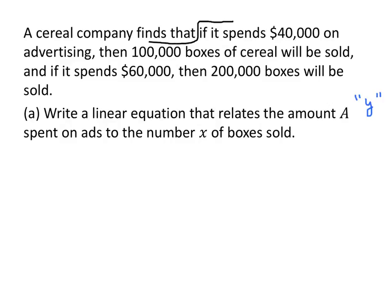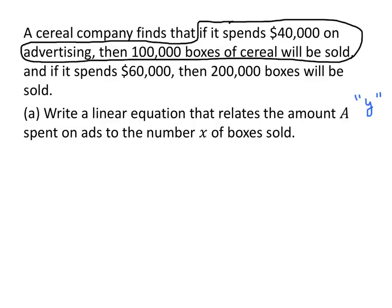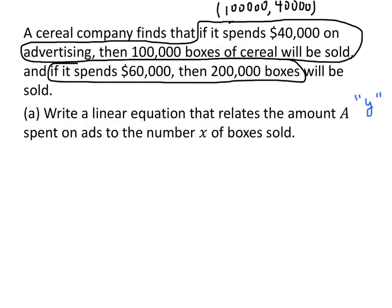The first piece of information says if the company spends $40,000 on advertising, then 100,000 boxes of cereal will be sold. Since X is the number of boxes sold, the X coordinate of our first point is 100,000. And since Y is the amount spent on ads, $40,000 is our Y value. Similarly, the second piece of information — spending $60,000 yields 200,000 boxes — gives us the point (200,000, 60,000).